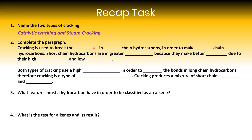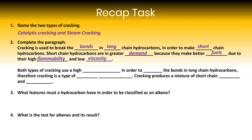The two types of cracking are catalytic cracking and steam cracking. Cracking is used to break the bonds in long-chain hydrocarbons in order to make short-chain hydrocarbons. Short-chain hydrocarbons are in greater demand because they make better fuels due to their high flammability and low viscosity — we want a fuel to be flammable and not too thick, otherwise it would block the pipes in an engine. Both types of cracking use high temperatures to break bonds in long-chain hydrocarbons, therefore cracking is a type of thermal decomposition.